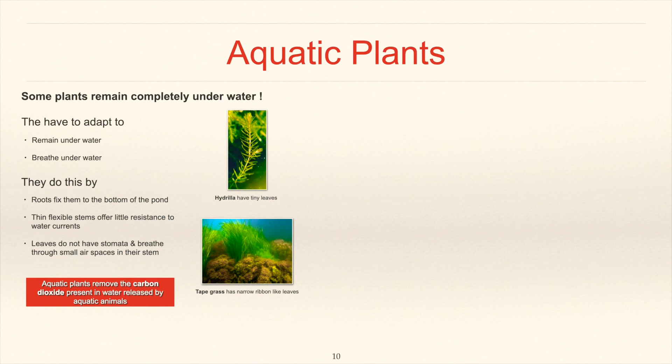Few examples of aquatic plants are hydrilla that have tiny leaves and tape grass that has narrow ribbon-like leaves.